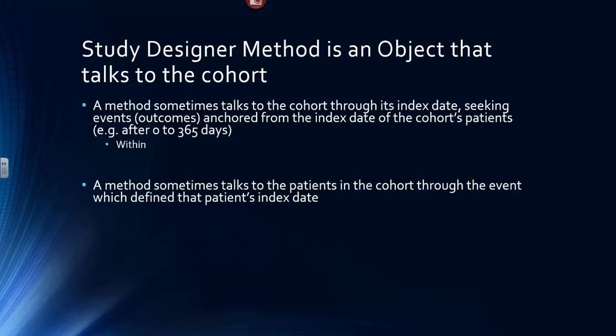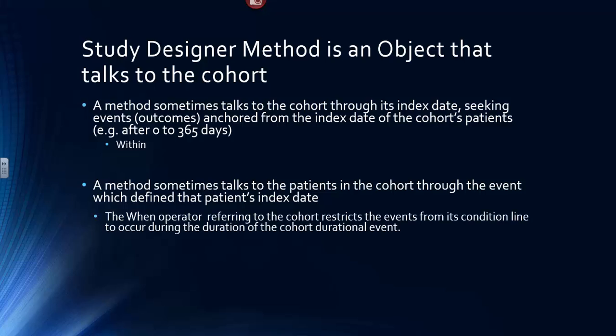A method sometimes talks to the patients in the cohort through the event which defined that patient's Index State. You saw this with the when operator, so that a condition line can point with its when operator to another condition line, and by doing that, tells the event canvas, I only want to include events in my condition line that occurred during the duration of the event to which I am pointing.